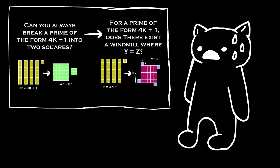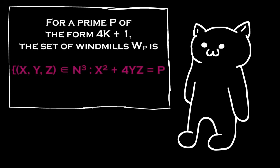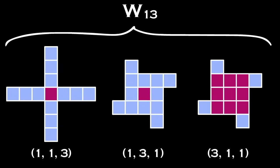This may appear to be a harder problem than what we had before, but by considering the set of windmills for a given prime p, then we start to see two things occur. For example, let's consider the set of windmills for 13.